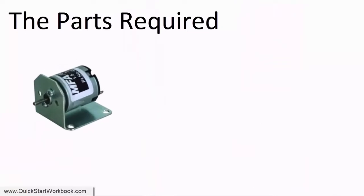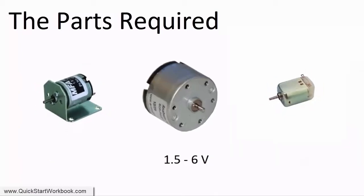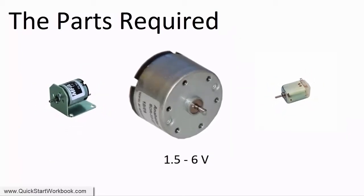So what sort of motor do we need? Well small hobby DC motors range from requiring 1.5 volts to 15 volts DC. In this video I'll be using what could be classed as a mid-range hobby DC motor that typically needs somewhere in the range 1.5 volts to 6 volts.